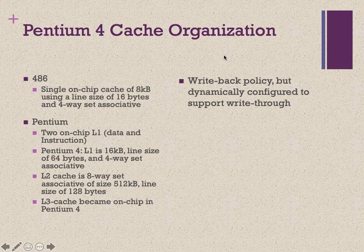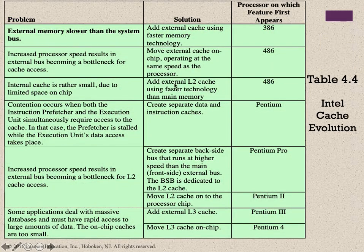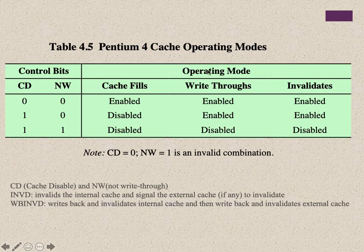This is a Pentium 4 cache organization used as a case study, where you can see all the replacement algorithms, write-back and write-through policies, split and unified caches, and different line sizes in a real architecture. The Pentium 4 has an L1 data cache and L1 instruction cache, a unified L2 cache, and a 1MB L3 cache. It uses a write-invalidate protocol. Thank you very much.